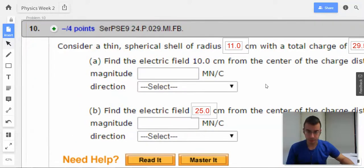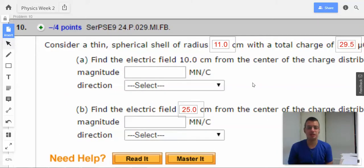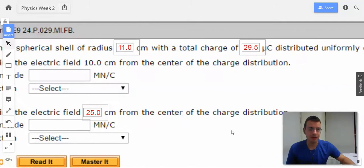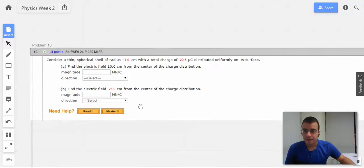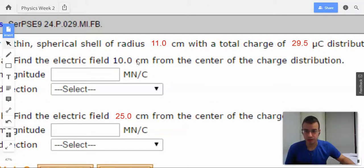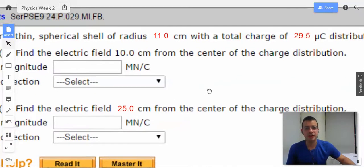Problem 10. Consider a thin spherical shell of radius 11 centimeters with a total charge of 29.5 μC evenly distributed on its surface. Find the electric field 10 centimeters from the center of the charge distribution.